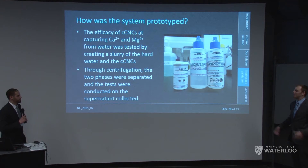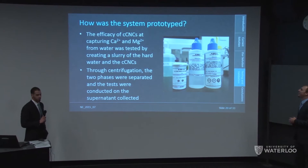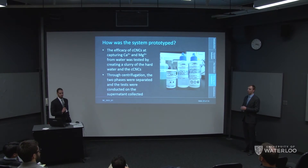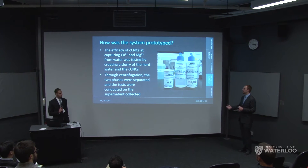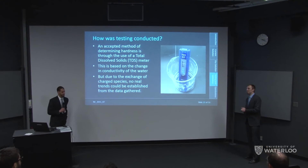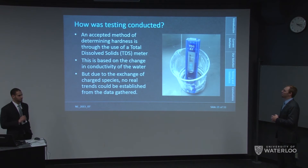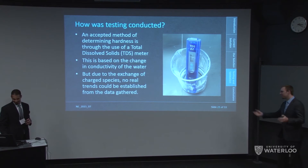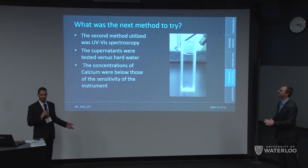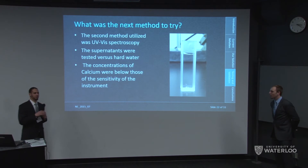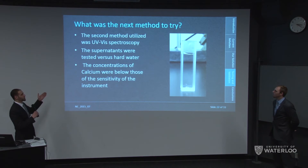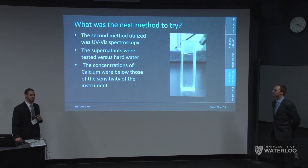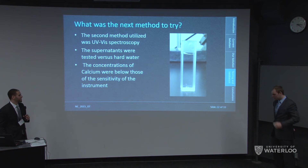To confirm the calcium exchange, we created a slurry of our material in hard water, separated the two phases, and measured the supernatant. Our first testing method was a total dissolved solids meter based on changing conductivity, but since we are exchanging ions for ions, this did not provide useful information about calcium exchange. We then tried UV-Vis spectroscopy, but the concentrations were far too low for the system's detection limits — where we expected peaks, the system could not detect them. So we had to move on.